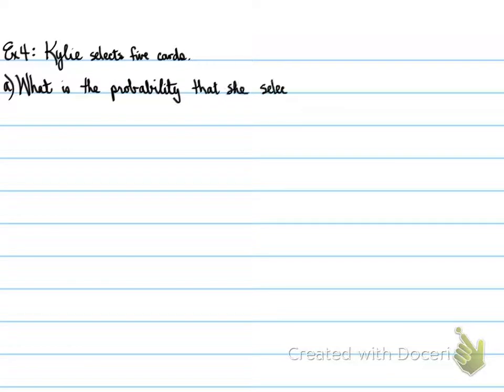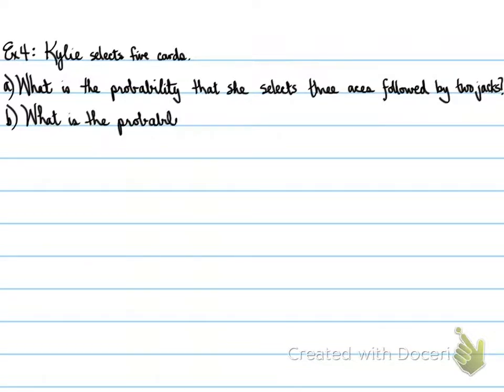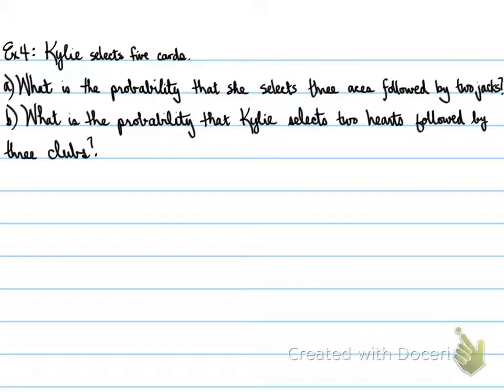Okay, moving forwards. Example number four. Kylie selects five cards. And here they are. What is the probability that she selects three aces followed by two jacks? And the second part is, what is the probability that Kylie selects two hearts followed by three clubs? Now, remember, we don't replace these cards. So what's the chances of selecting that particular order?